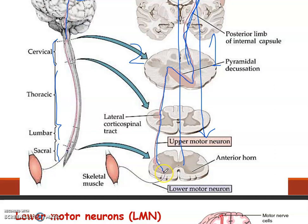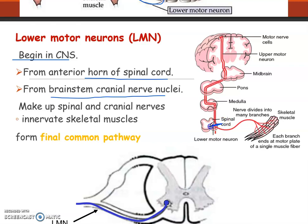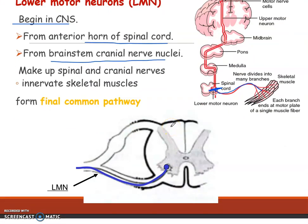There is another group of neurons known as lower motor neurons which take signals to the skeletal muscles. Lower motor neurons begin in the CNS and they arise from the anterior horn of the spinal cord and brainstem cranial nuclei. From the anterior horn of the spinal cord, lower motor neurons arise and take signals to the skeletal muscles.